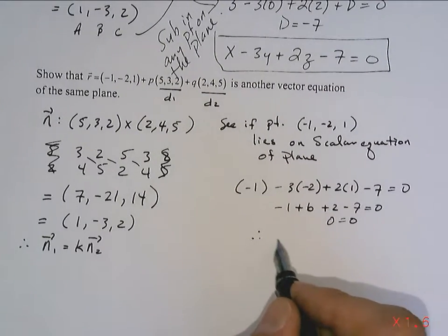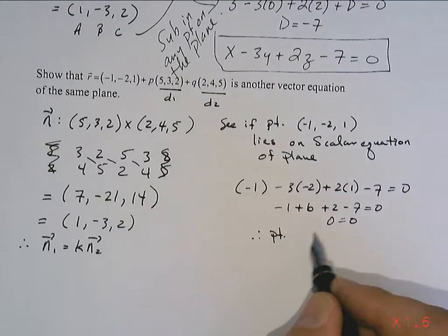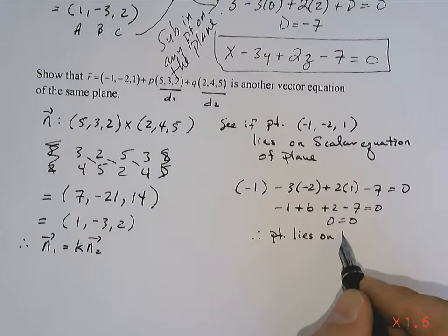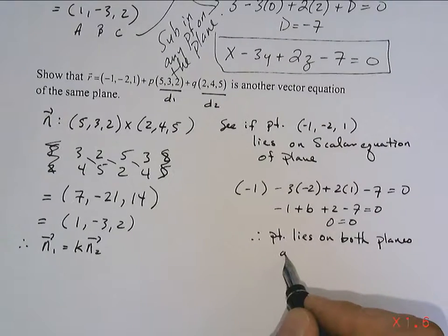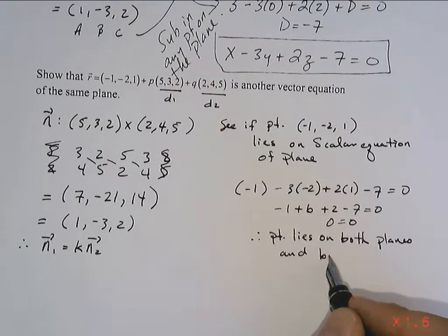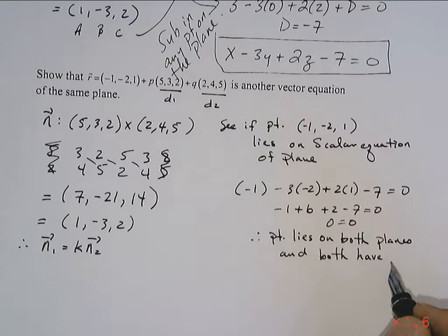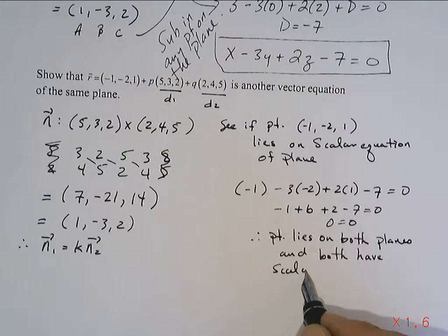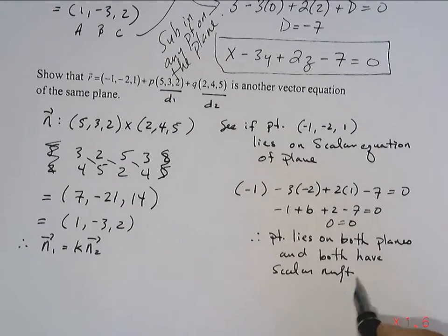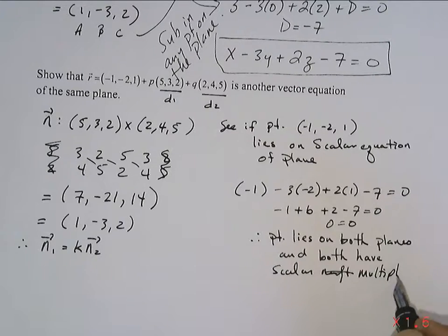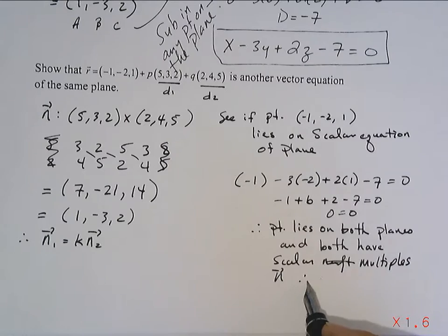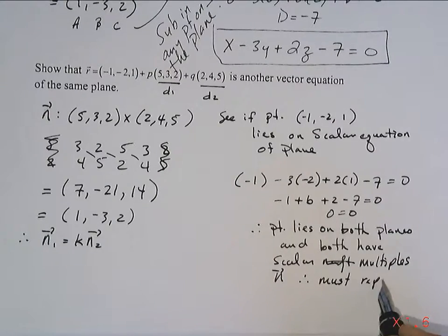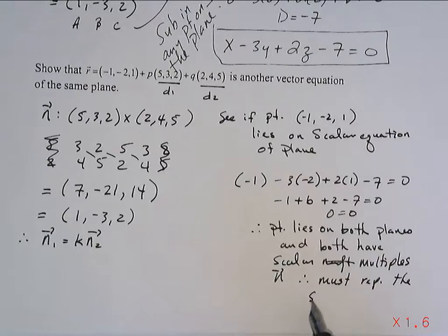point lies on both planes, and both have scalar multiples. That says multiples, that says multiples. I can hear Olivia yelling at me already. Multiples. Normals, therefore, must represent the same plane.